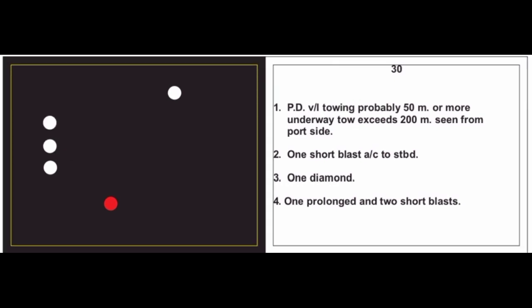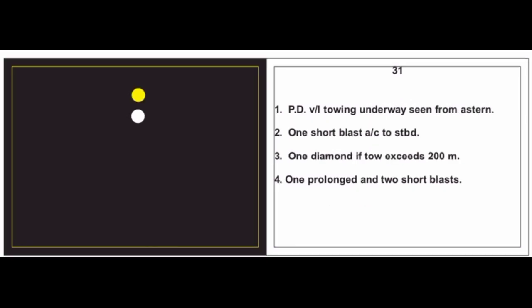Card 30: Power driven vessel towing, probably 50 meters or more, underway with tow exceeding 200 meters, seen from port side. One short blast, alter course to starboard. Day signal: one diamond. Sound signal: one prolonged and two short blasts. Card 31: Yellow light indicates towing light — power driven vessel towing, underway, seen from stern. One short blast, alter course to starboard, keep that vessel to our port and pass clearly. Day signal: one diamond if tow exceeds 200 meters — length unclear from stern. Sound signal: one prolonged and two short blasts.